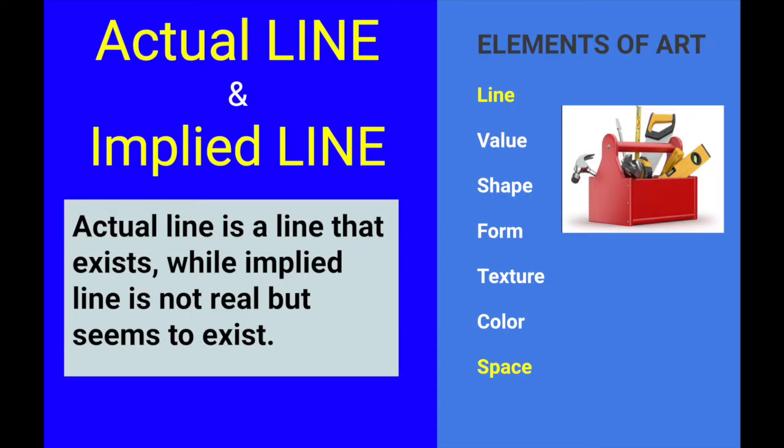The two terms on this video now are actual line and implied line. Actual line is a line that actually exists — it's been made with some kind of marking instrument. Implied line does not really exist; it's not real, but it seems to exist in our mind. Our brain fills in the space — fills in the blank, in other words.